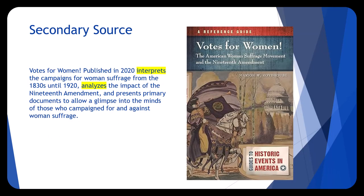Later, you find a scholarly book on the topic of women's suffrage written by a researcher from 2020. It is considered a secondary source because it does not come from the time period you are researching and does not offer first-hand evidence of the event.